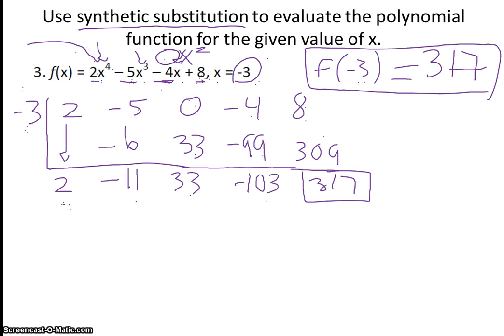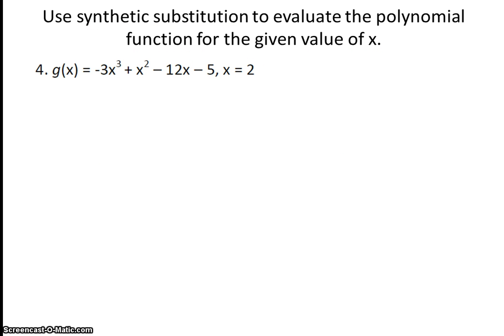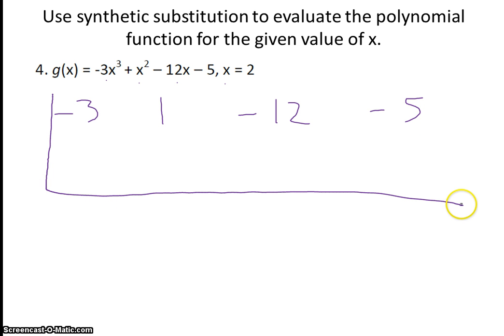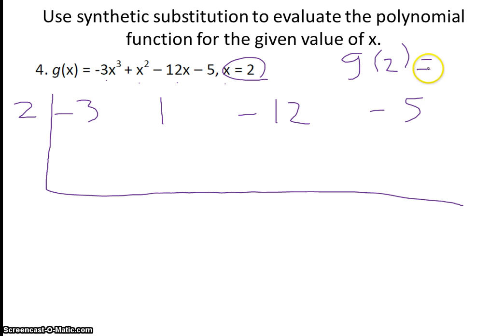Let's go on to the next problem. For the second problem of synthetic substitution, I have my function g of x, and I don't have any missing terms. So when I write out my coefficients, that's negative 3, 1, negative 12, and negative 5. I set up my box, and I'm plugging in 2. Ultimately, I want to find g of 2 — what that answer is when I plug 2 in.